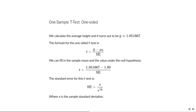We calculate the average height of these individuals, and it turns out to be around 1.85, and we can start filling in some values. The formula for the one-sided t-test is the sample mean minus the value under the null hypothesis divided by the standard error. We already have two of these values: a sample mean of 1.85, and the null hypothesis that it should be 1.8. The last thing is then the standard error, which is equal to the sample standard deviation divided by the square root of the sample size.